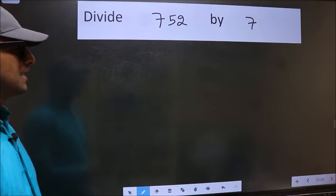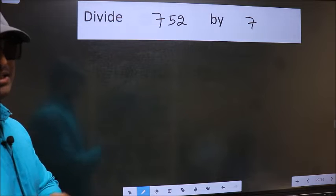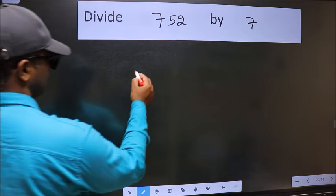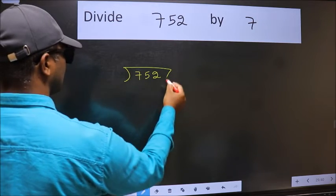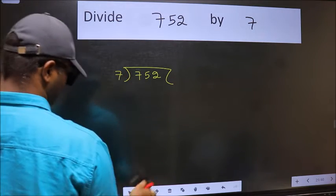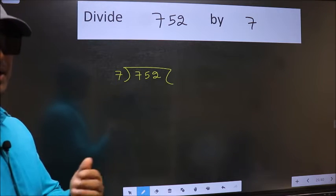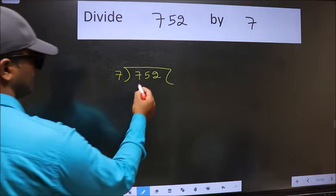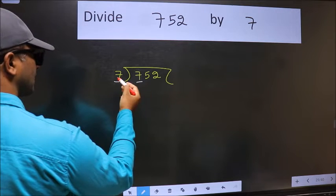Divide 752 by 7. To do this division, we should frame it in this way: 752 here and 7 here. This is your step one. Next, here we have 7 and here 7. When do we get 7 in the 7 table? 7 once is 7.